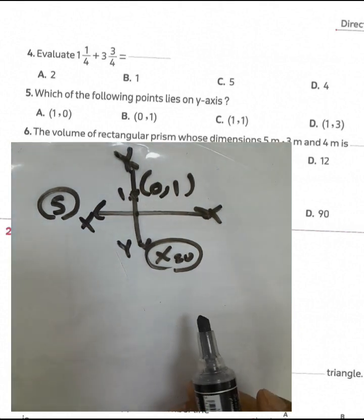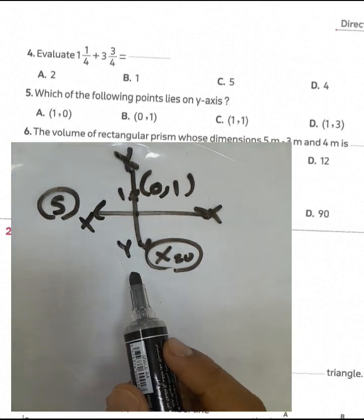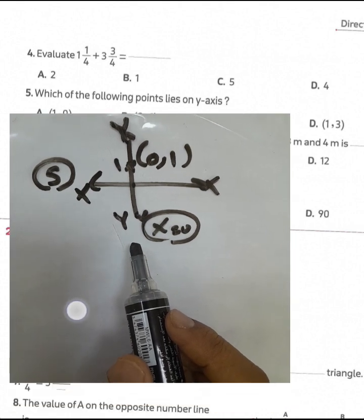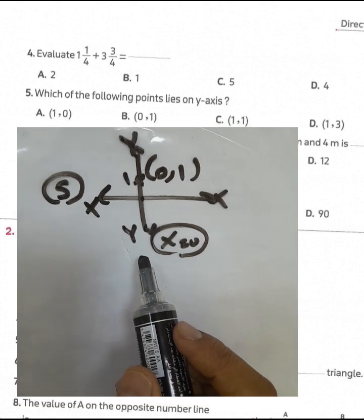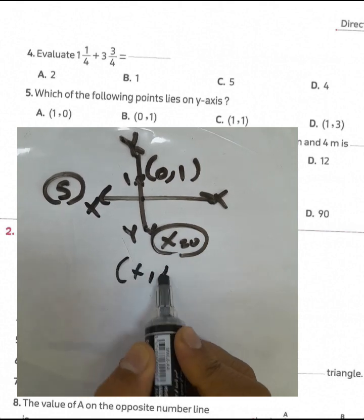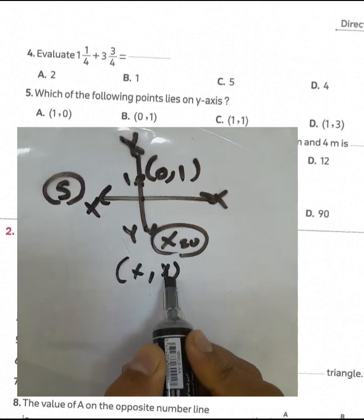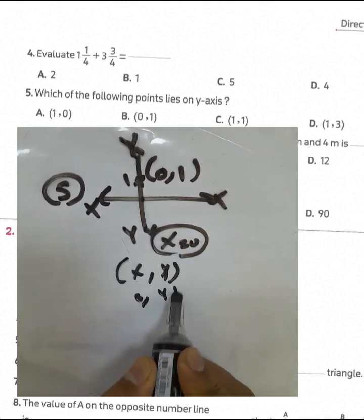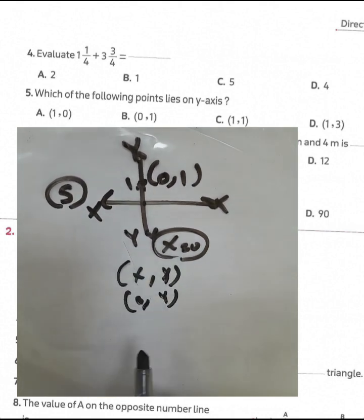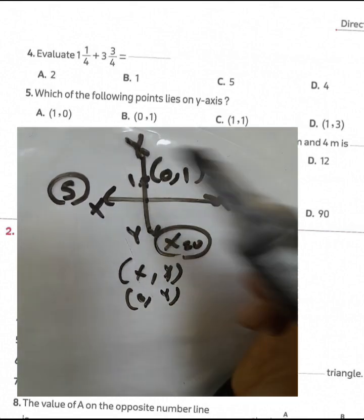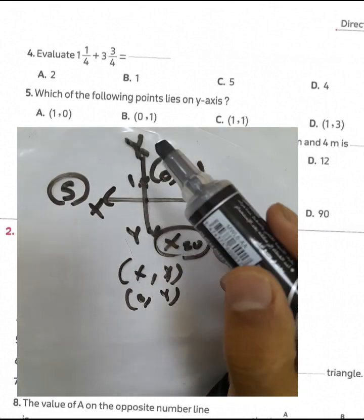Again, question number 5: which of the following points lies on the y-axis? It means x equals 0. For any point (x, y), x will be equal to 0 and y can be any number. We must choose letter P, because letter P gives us (0, 1).